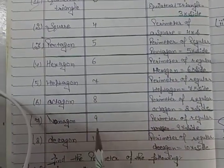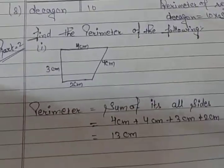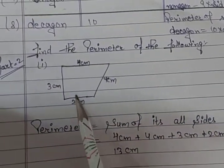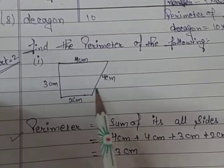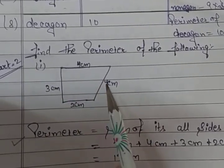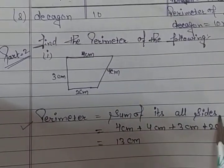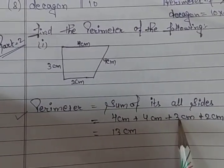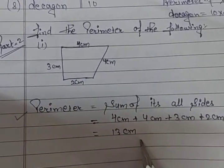Now we will start from part 2. Find the perimeter of the following. First, we can observe here all the sides are not equal — no exact figure, no square or rectangle — so it will use the basic formula: sum of all sides. 4 plus 4 is 8, 8 plus 3 is 11, 11 plus 2 is 13. So 13 cm is your answer.